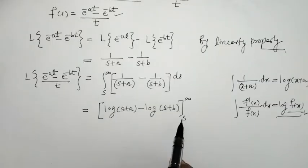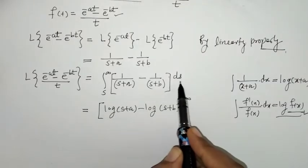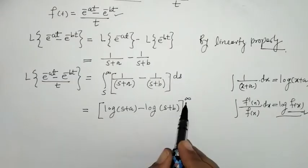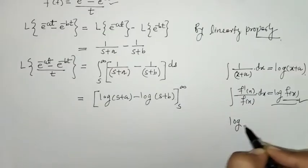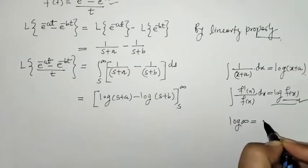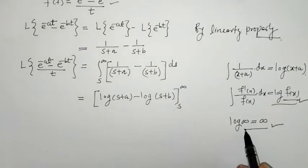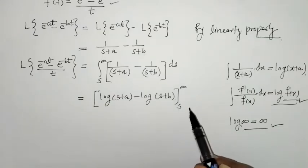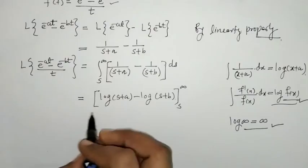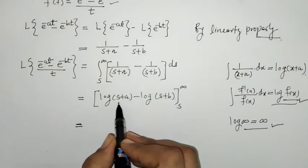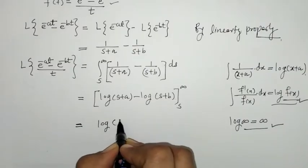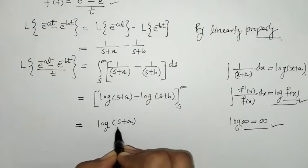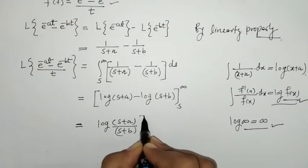Now we put in the limits. When we put the upper limit s → ∞, we get log(∞), which is infinite. So to get a finite Laplace, we adjust the terms using the log rule and write this as log((s+a)/(s+b)), within the limit s to infinity.